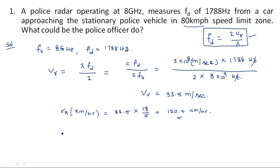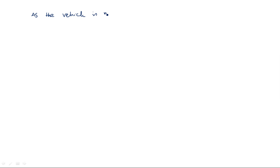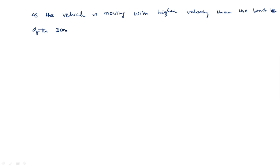Comparing the values: the speed limit is 80 km/h, but the car is moving at 120.7 km/h — the vehicle is moving with higher velocity than the speed limit of the zone. Therefore, the police officer has to stop that driver and impose a fine. This is how such practical problems are solved.